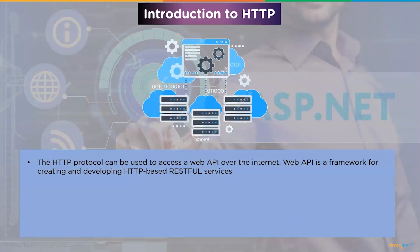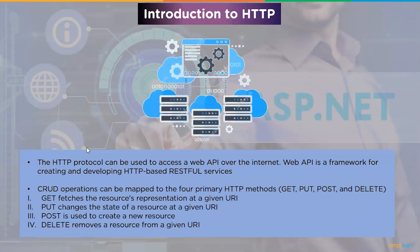Now let's look at an introduction to HTTP. The HTTP protocol can be used to access a Web API over the internet — it's the framework for creating HTTP-based RESTful services. Hypertext Transfer Protocol is a protocol for retrieving resources such as HTML documents, and it is the foundation of data interchange on the internet. It is a client-server protocol where requests are initiated by the client, commonly the web browser. CRUD operations map to the four primary HTTP methods: GET, PUT, POST, and DELETE. GET fetches a resource, PUT changes the state of a resource, POST creates a new resource, and DELETE removes a resource.